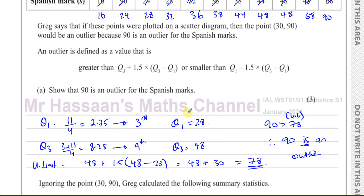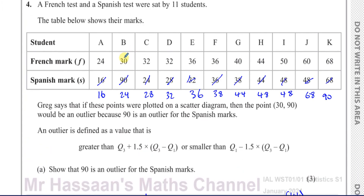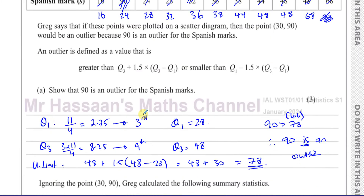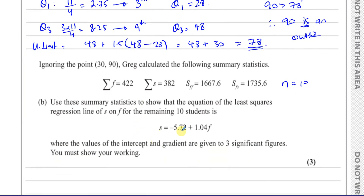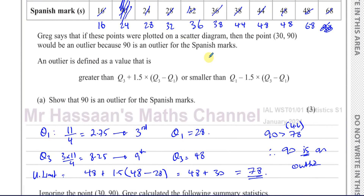Ignoring the point (30, 90), Greg calculated the following summary statistics based on the remaining 10 students — this point has been removed. We need to show that the equation of the least squares regression line of S on F for the remaining 10 students matches the given equation. When you plot these points excluding that outlier and find the line of best fit, this is what the equation will be.